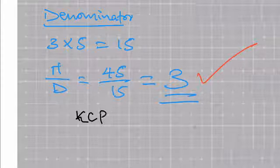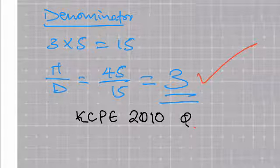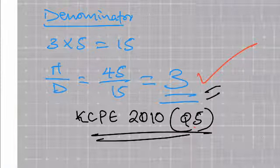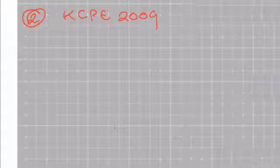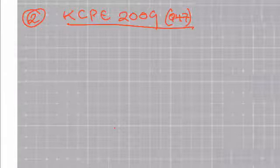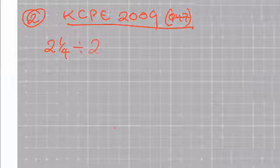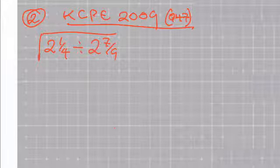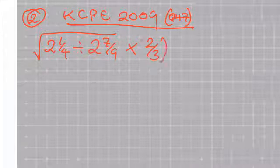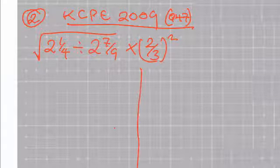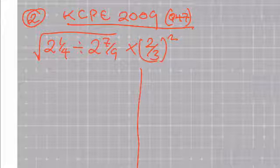This was set in the KCPE of 2010, question 5. I want to look at question number 2, which was set in the KCPE of 2009, question 47. We have 2 and 1 over 4, divided by 2 and 7 over 9 under the square root, multiplied by the square of 2 over 3. The first thing you do is convert everything to a proper fraction.